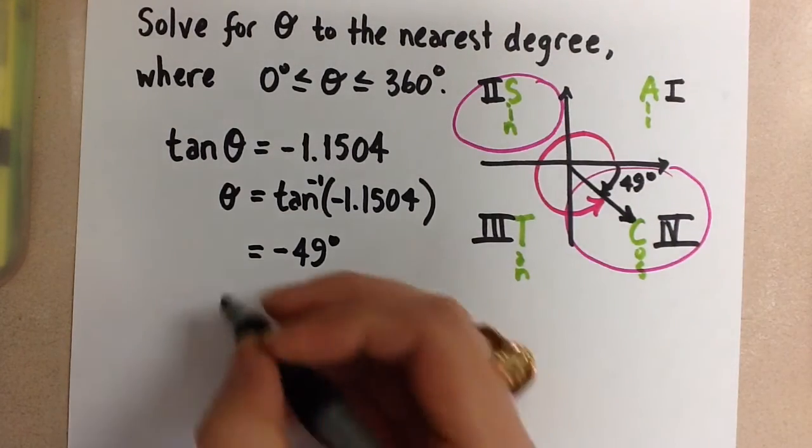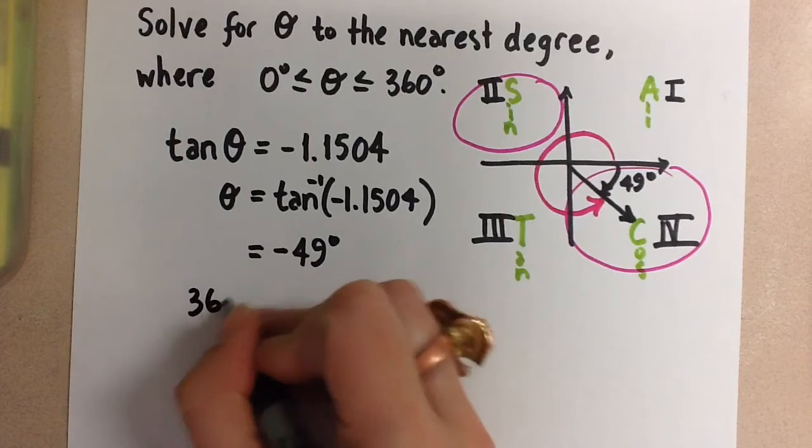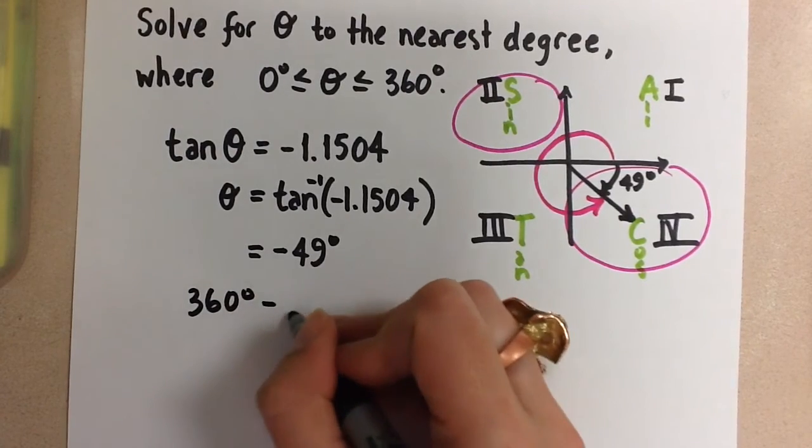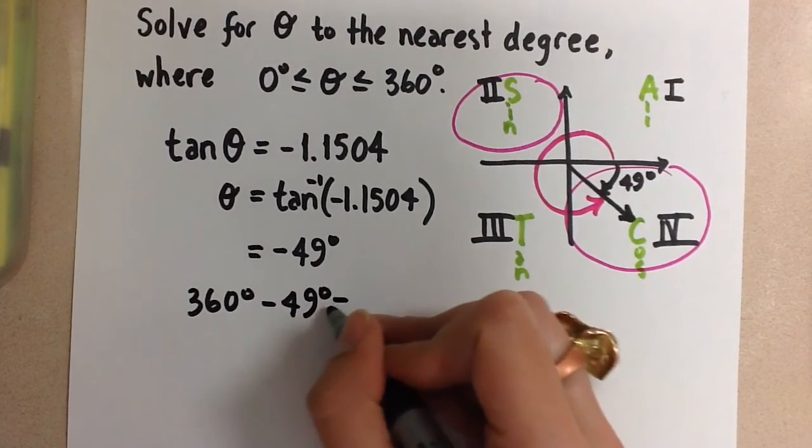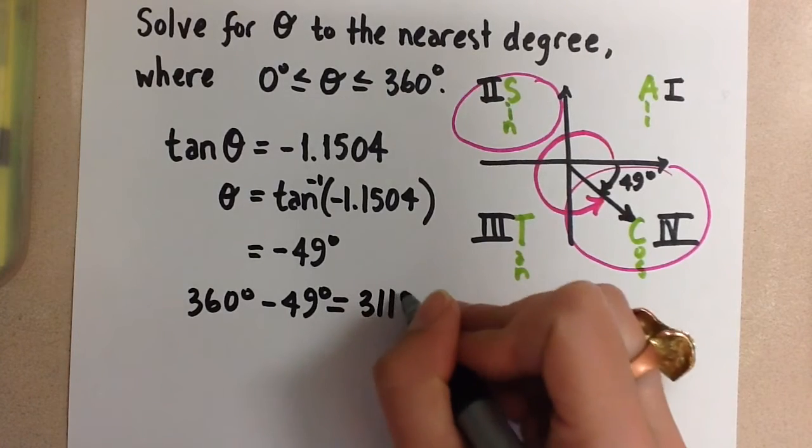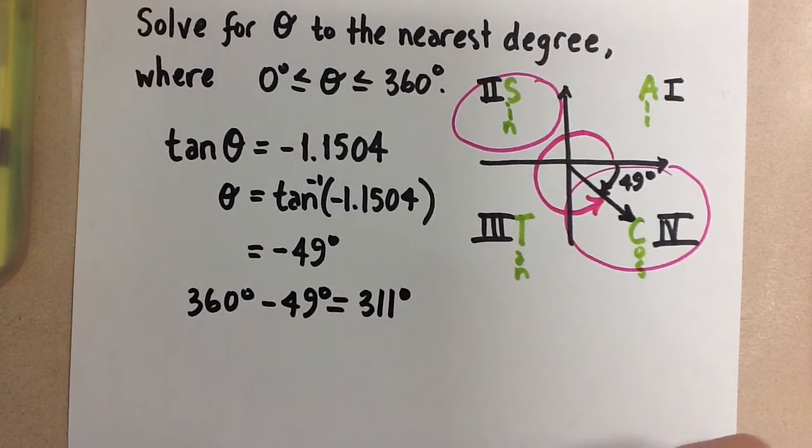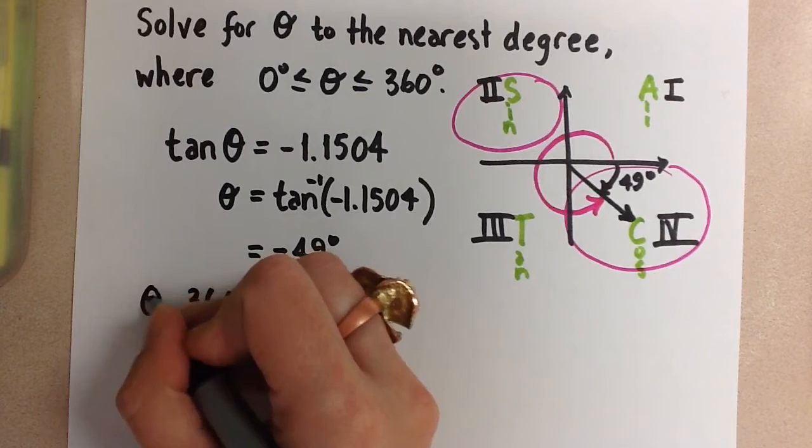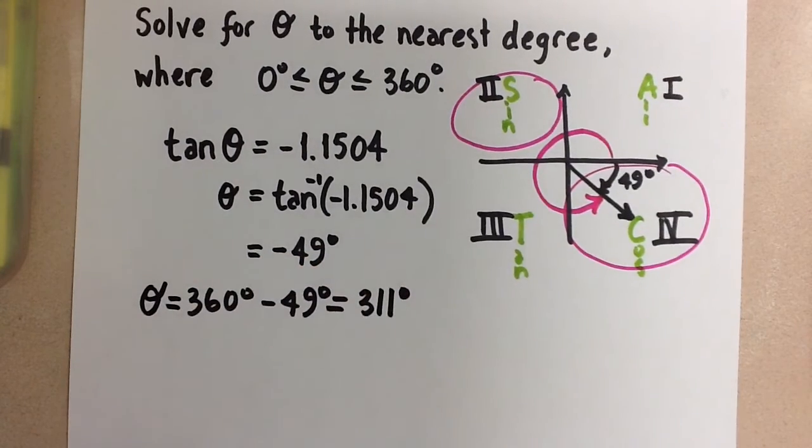So in order to solve for that, we're going to do 360 degrees minus 49 degrees. And we get 311 degrees. So that's the first solution for this expression.